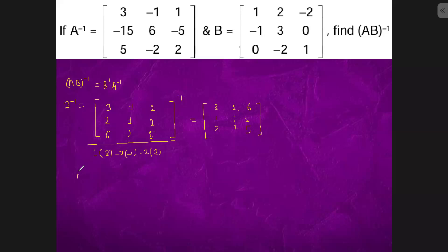And now we have to find B inverse A inverse. A inverse is 3, minus 15, 5, minus 1, 6, minus 2, 1, minus 5.